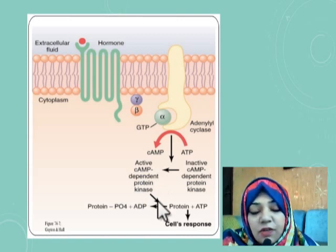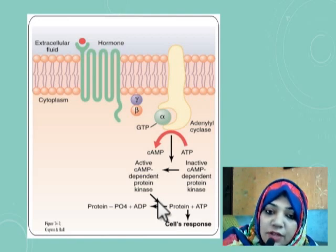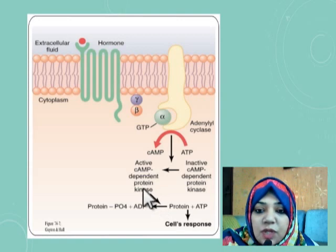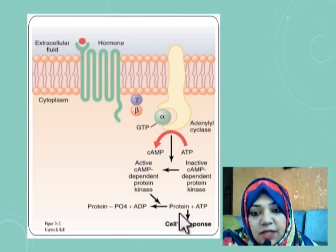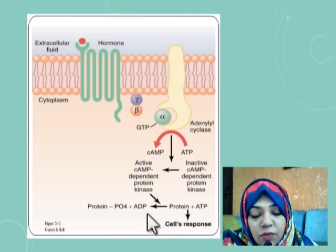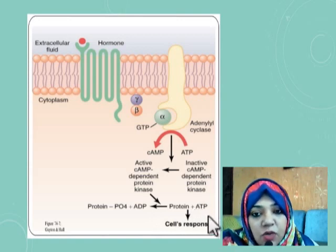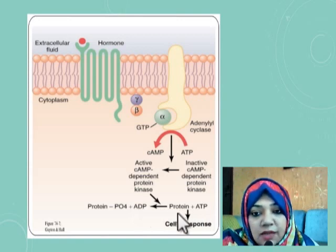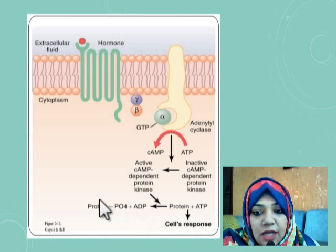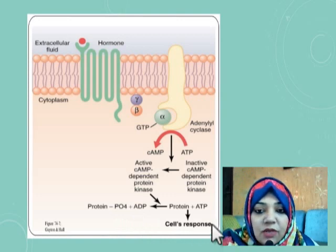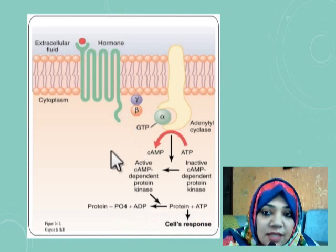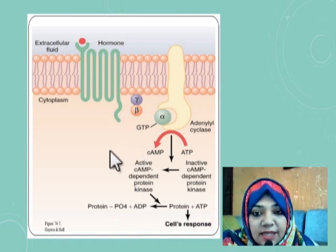This protein kinase phosphorylates other intracellular enzymes, initiating a cascade of reactions responsible for the cellular response to the hormone. Phosphorylate means it adds a phosphate group to other proteins. The phosphate group comes from ATP — ATP donates a phosphate group and becomes ADP, while the protein receives the phosphate and becomes protein-phosphate. This leads to the cellular responses that the hormone intends.